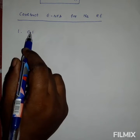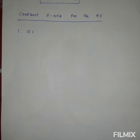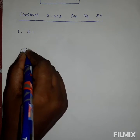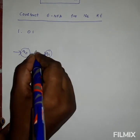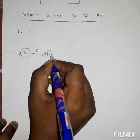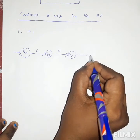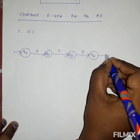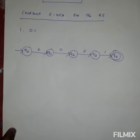Between 0 and 1 there is a concatenation operator, meaning the current state gets 0 and goes to another state, then the next state gets 1 and goes to the next state. So the initial state is q0. q0 gets epsilon as input and goes to q1; q1 gets 0 as input and goes to q2; q2 gets epsilon as input and goes to q3; and finally q3 gets 1 as input and goes to q4, which is the final state. This is the epsilon-NFA for the regular expression 01.